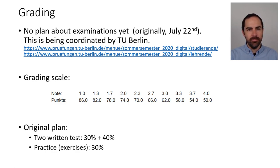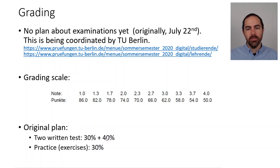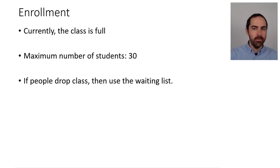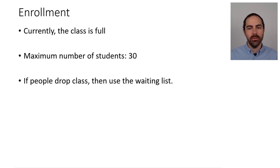How about grading? There is no confirmed plan about examinations yet. Originally the final exam was set for July 22nd, but this is being coordinated by TU Berlin. The original plan was two written tests — one midterm and one final — with exercises counting 30%. The written exams are likely being converted to oral exams, but this is not fully decided yet. Regarding enrollment: the class is full with a maximum of 30 students. If people drop, others from the waiting list will get in. Please decide soon if you are staying or dropping so others can take your seat.